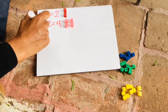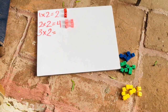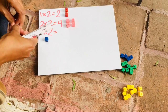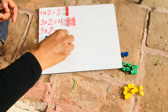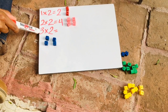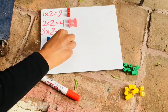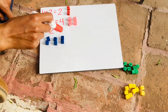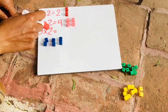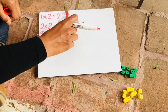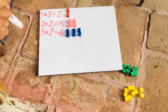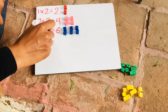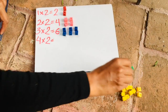The next one would be three times two. I'm pretty sure you know what to do, but I'm going to do this with you again. One group of two, two groups of two — and it's asking three groups of two. So we count by twos: two, four, six. Three times two equals six.